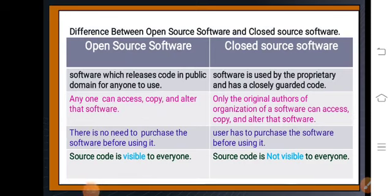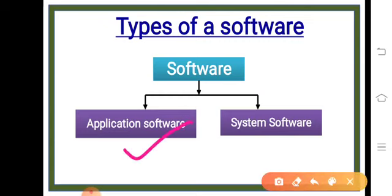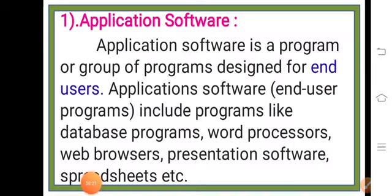After discussing categories of software, we have two types of software: application software and system software. Application software is a program or group of programs designed for end users. Application software — also called end user programs — includes programs like database programs, word processors, web browsers, presentation software, spreadsheets, etc.